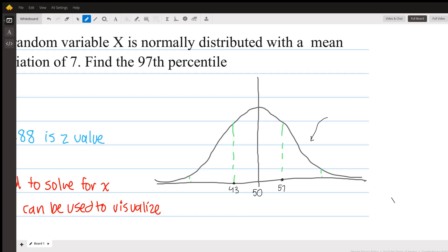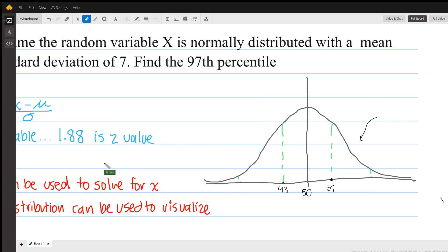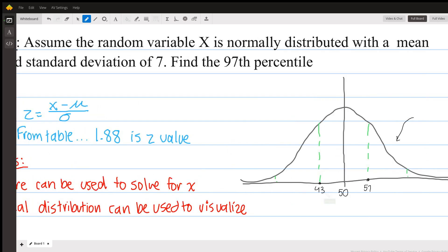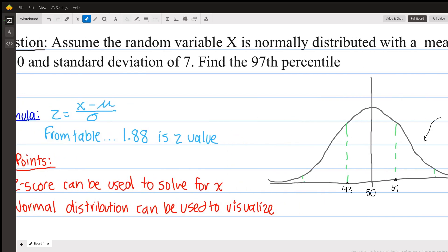We're asked to find the 97th percentile. So in order to do that, we're going to use this formula that I have listed here. So since we have come to the conclusion that the z value is 1.88, you just plug that in and then set it equal to the rest of the equation.